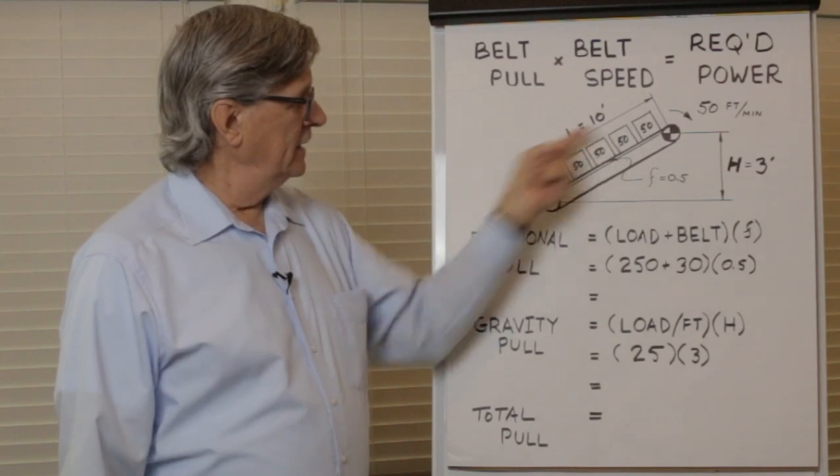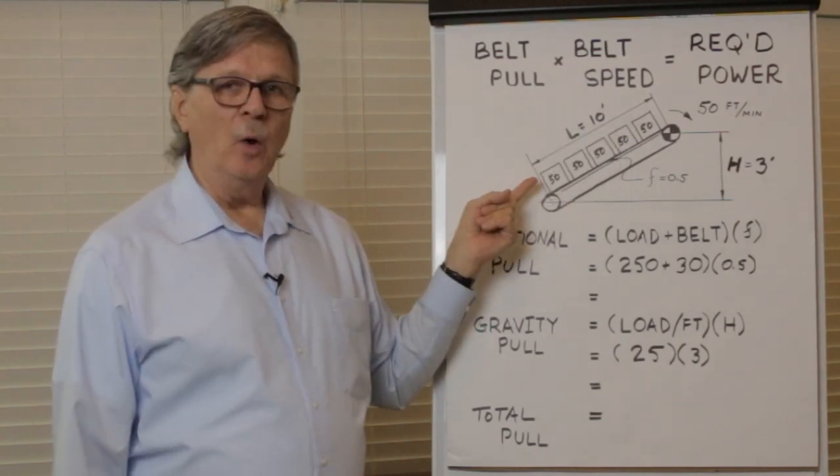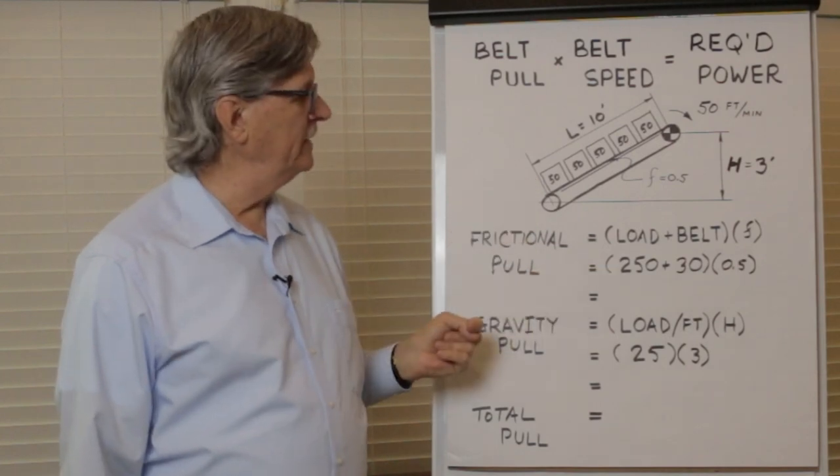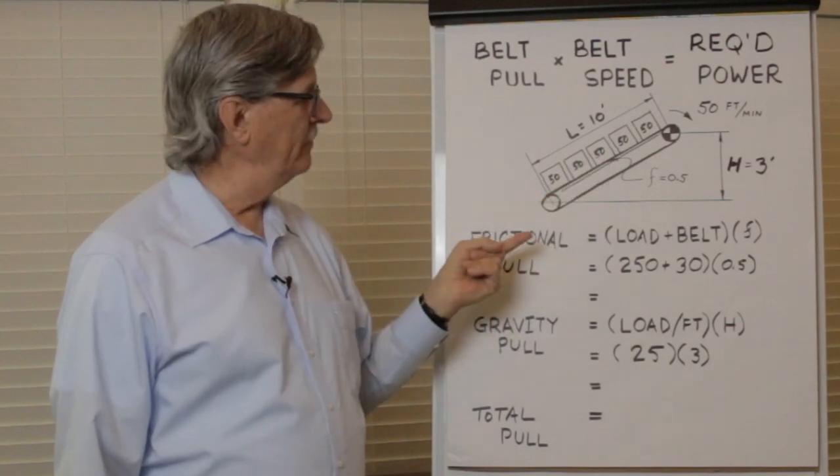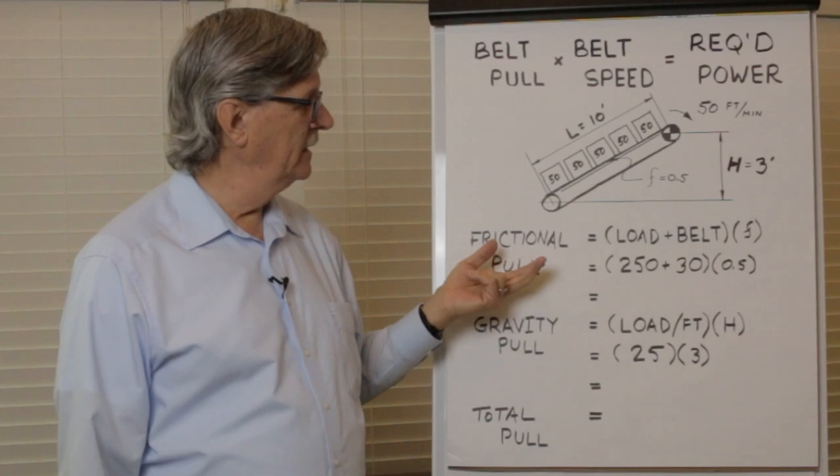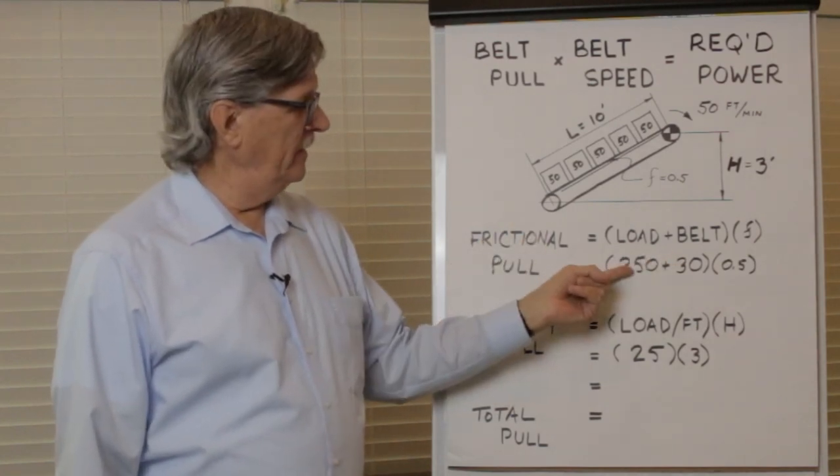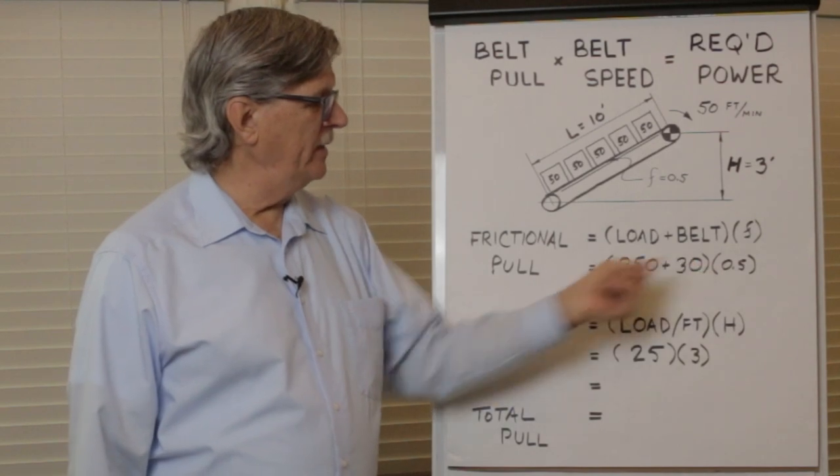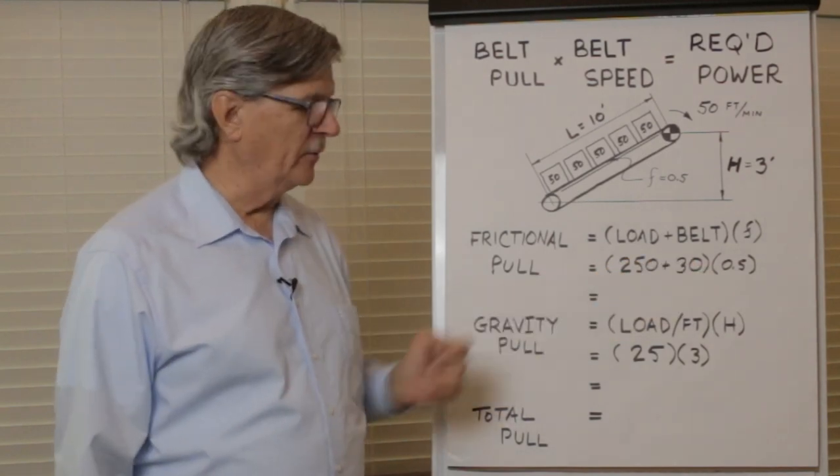Five packages times 50 pounds per package equals a total weight of load on the belt of 250 pounds. If the belt weight is three pounds per foot, then we have the length of ten feet which we multiply against three pounds per foot to come up with 30 pounds. 250 plus 30 times 0.5 gives us a required belt pull of 140 pounds.